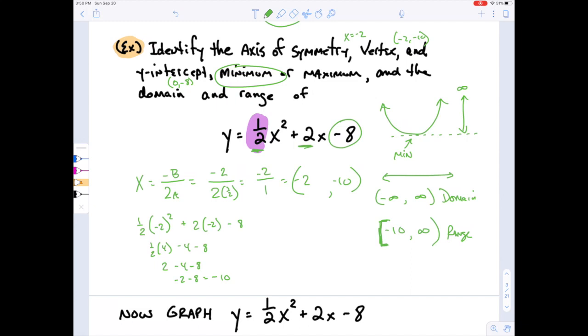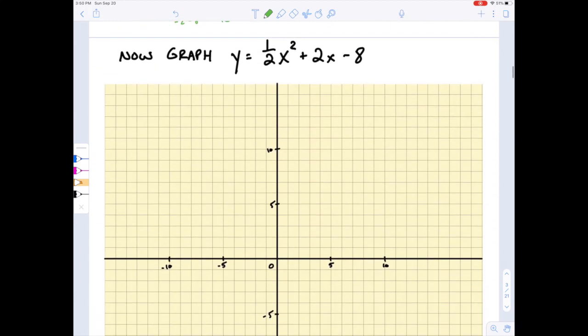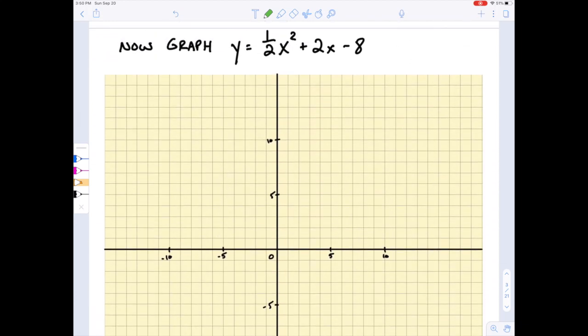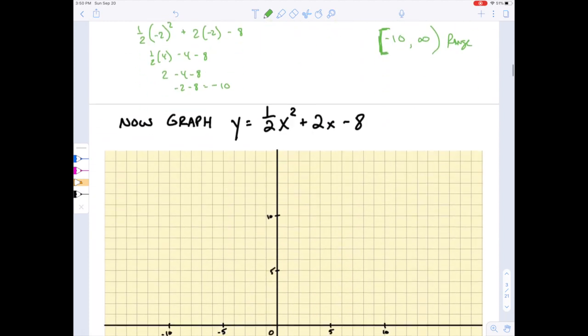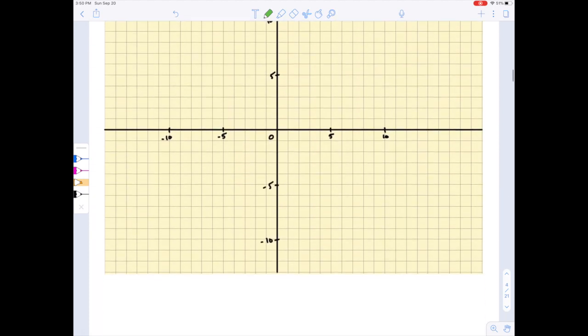So that takes care of everything it's asking. Now, as for the graph, let's just transfer it down. And here we go. My vertex was negative 2, negative 10. So negative 2, negative 10 looks like this.